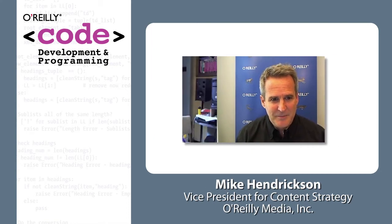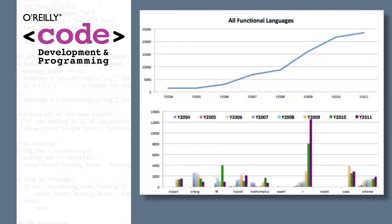Mike, how are you doing? Fine, how are you? I'm doing well, thanks. So I've got a graphic here that I want to show, and I'm just going to put it right in here for a second, and this is basically showing the growth of functional languages. It's showing a pretty nice growth from 2004 to 2011, but I think the scale is what's important. It went from basically 500 units to close to 25,000, so it's still relatively small as a group. And what's really driving this is R — R looks like about half of all the units for functional languages. So what do you think of R as a functional language and its growth?